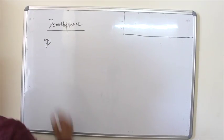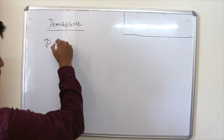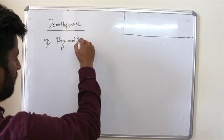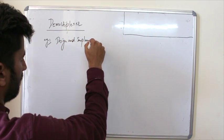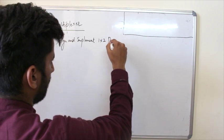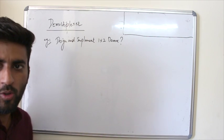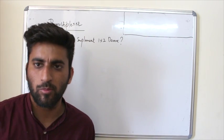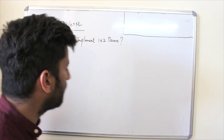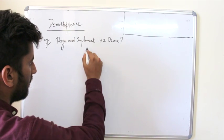That is, I have to design and implement, let's say, 1 into 2 demux. You have to design and implement 1 into 2 demux. Try to understand the process. It is very simple.